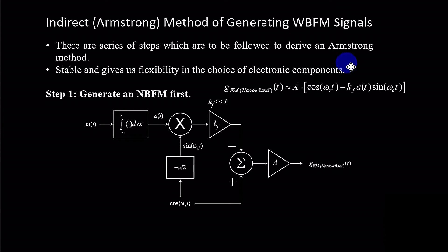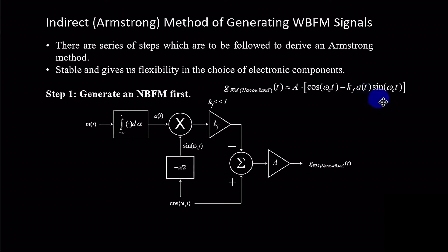The first and foremost thing is actually generating a narrowband FM. Generation of narrowband FM is quite simple. The FM modulated signal is A·cos(ω_c·t − k_f·a(t)), where a(t) is simply the integration of the message signal, and then it is multiplied by sin(ω_c·t). All of this is basically expressed in terms of a block diagram.